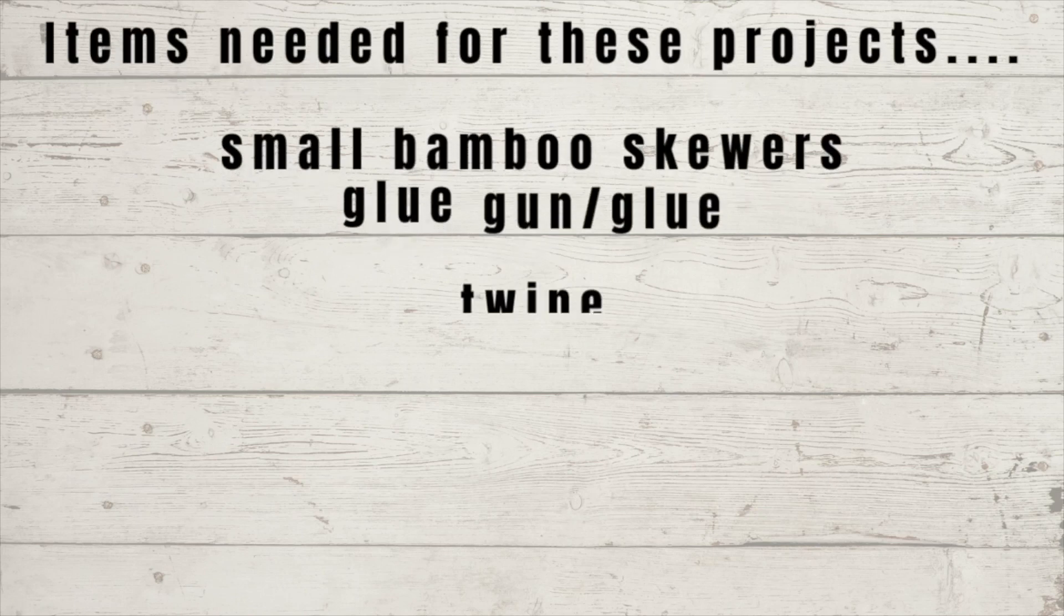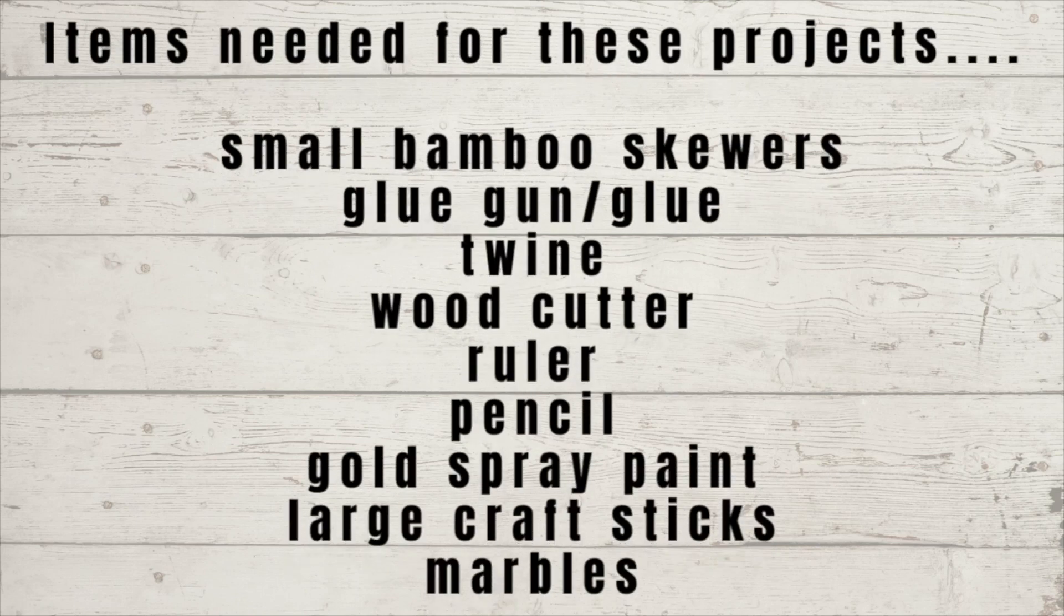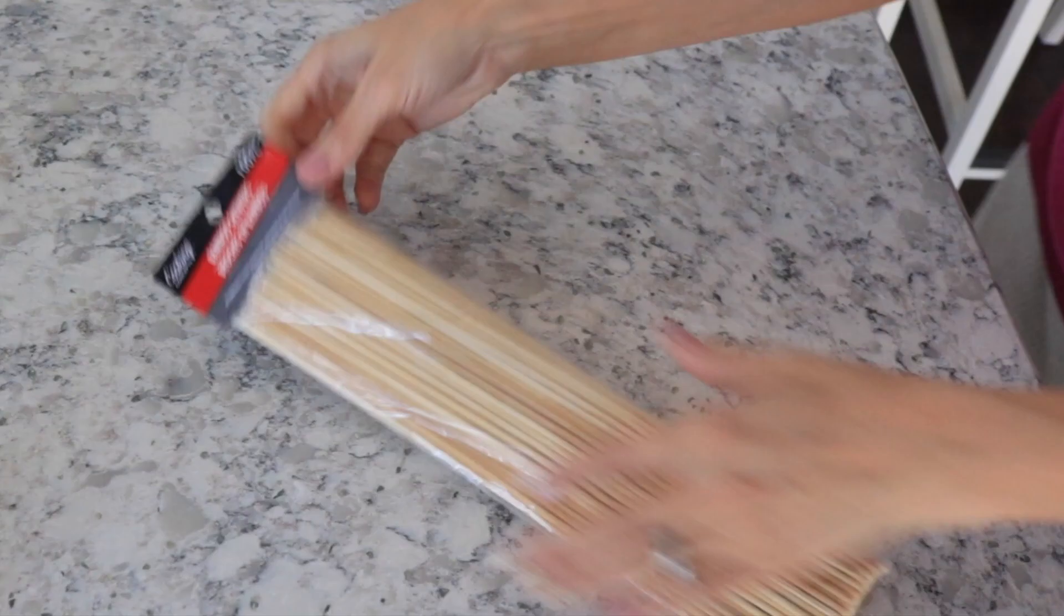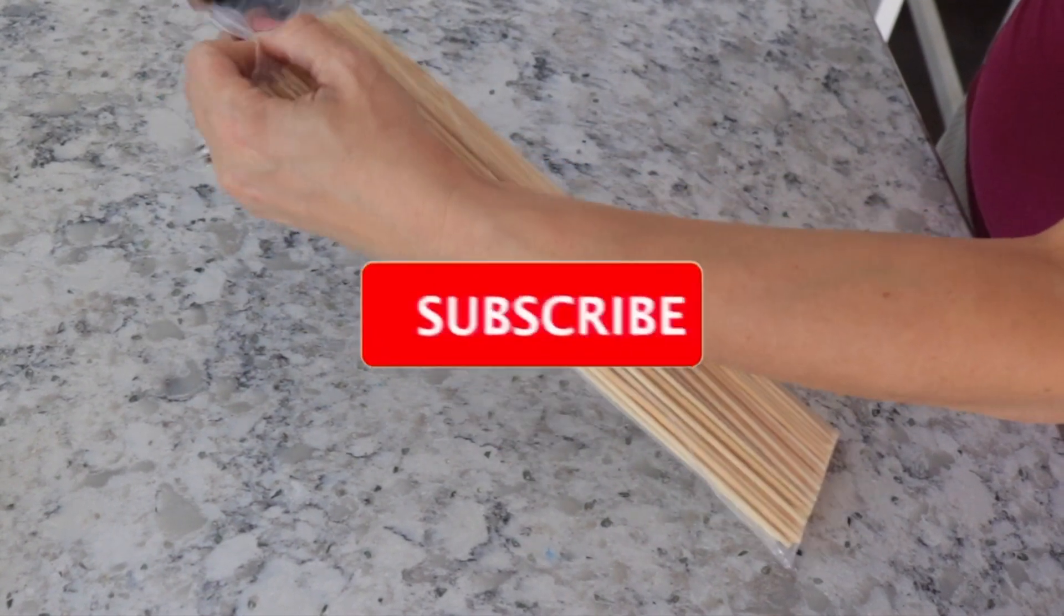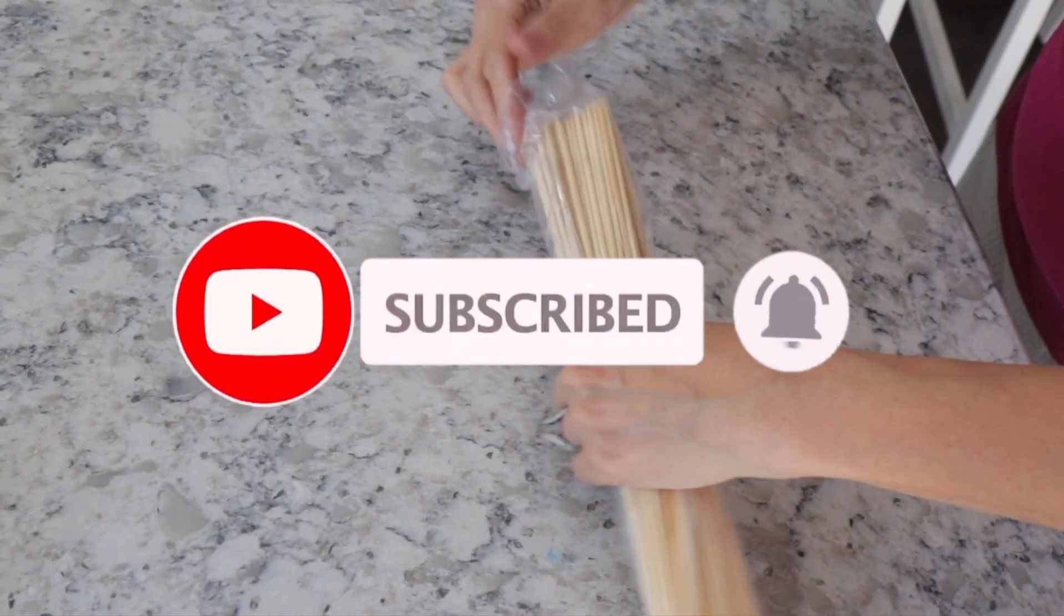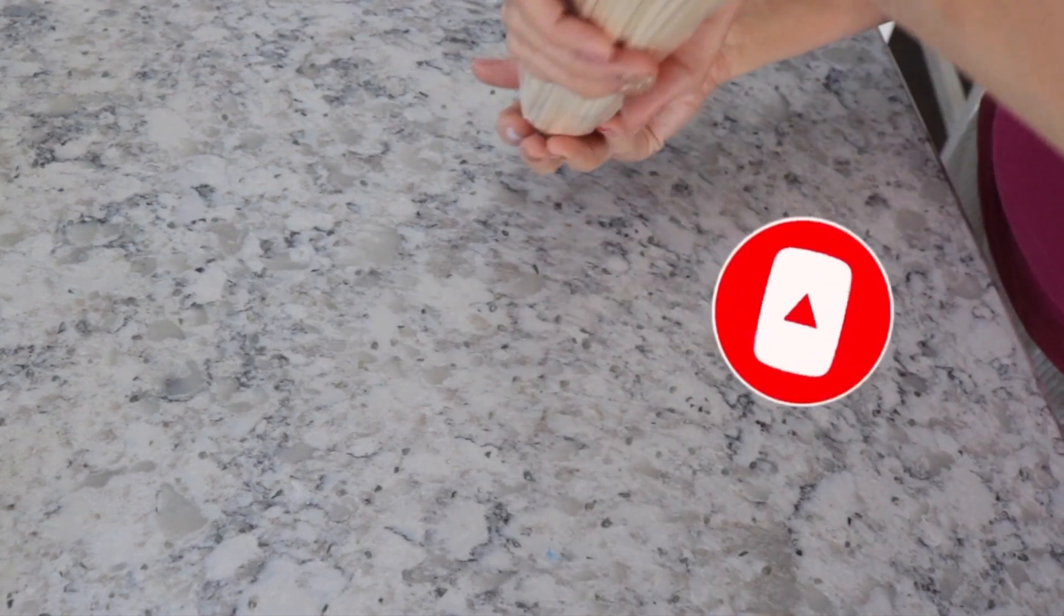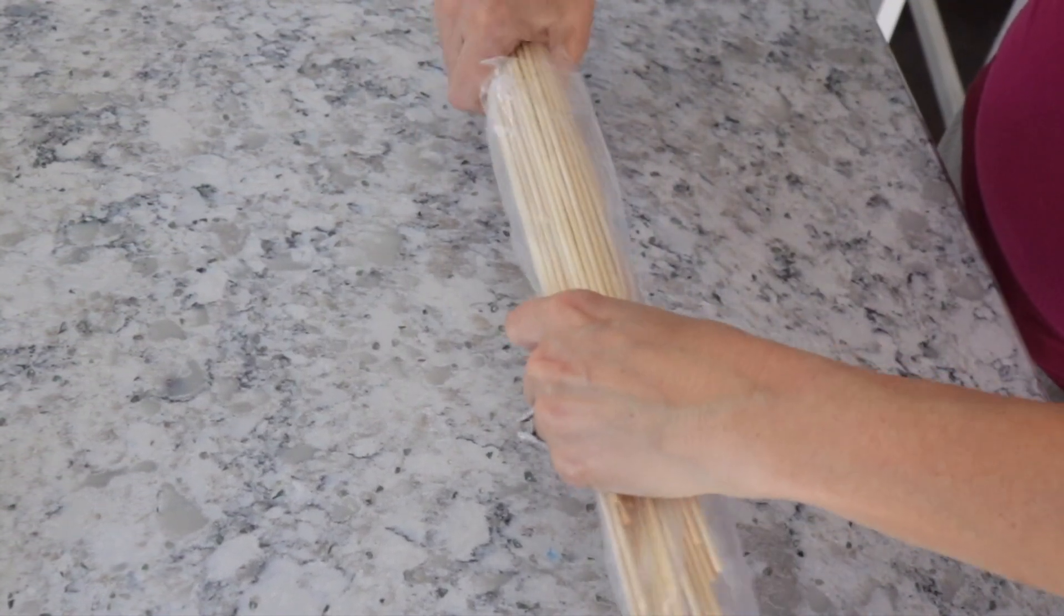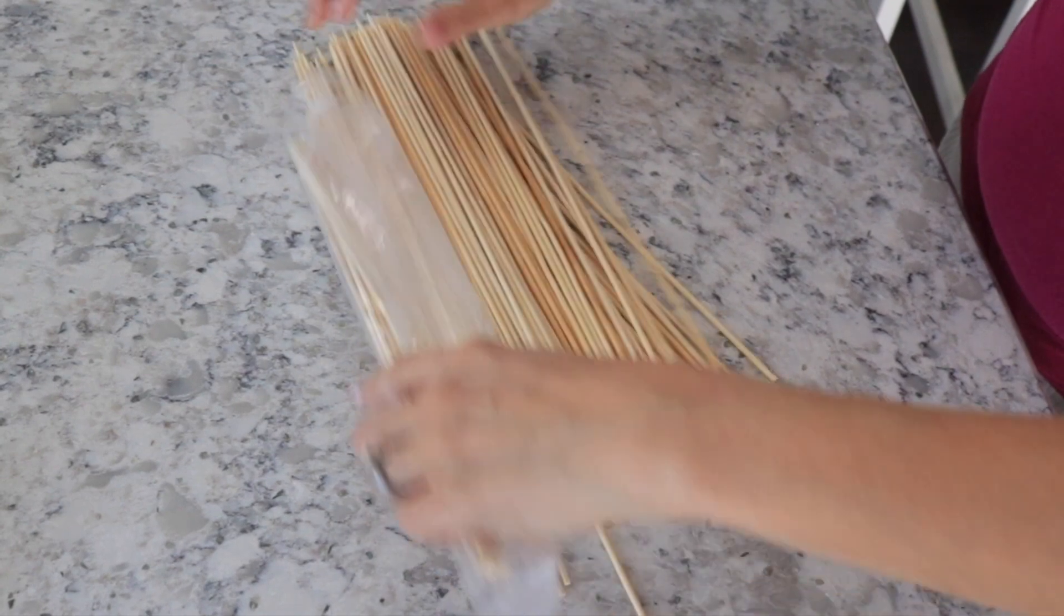Hey guys and welcome, we are just going to get right into this DIY. Go ahead and pause this if you want to see all of the items that I used for these projects, but the star of the show are these small little bamboo skewers from Dollar Tree. I've never seen these tiny ones before, I've only ever used the long ones and they're a little bit thicker. These are tinier and you get a hundred pieces.